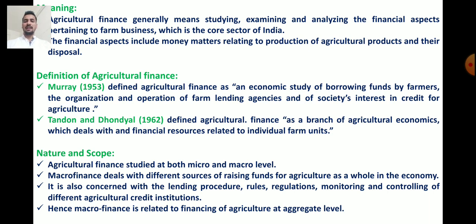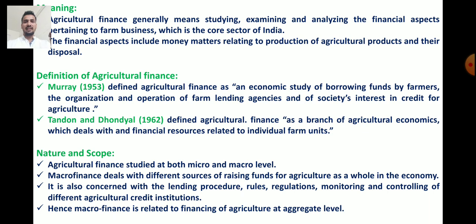Now, the definition of agricultural finance. Two economists have given definitions. First, Murray in 1953 defined agricultural finance as an economic study of borrowing funds by farmers, the organization of farm lending agencies, and of society's interest in credit for agriculture. Another definition is given by Tendall and Tendall in 1962, who defined agricultural finance as a branch of agricultural economics which deals with financial resources related to individual farm units.